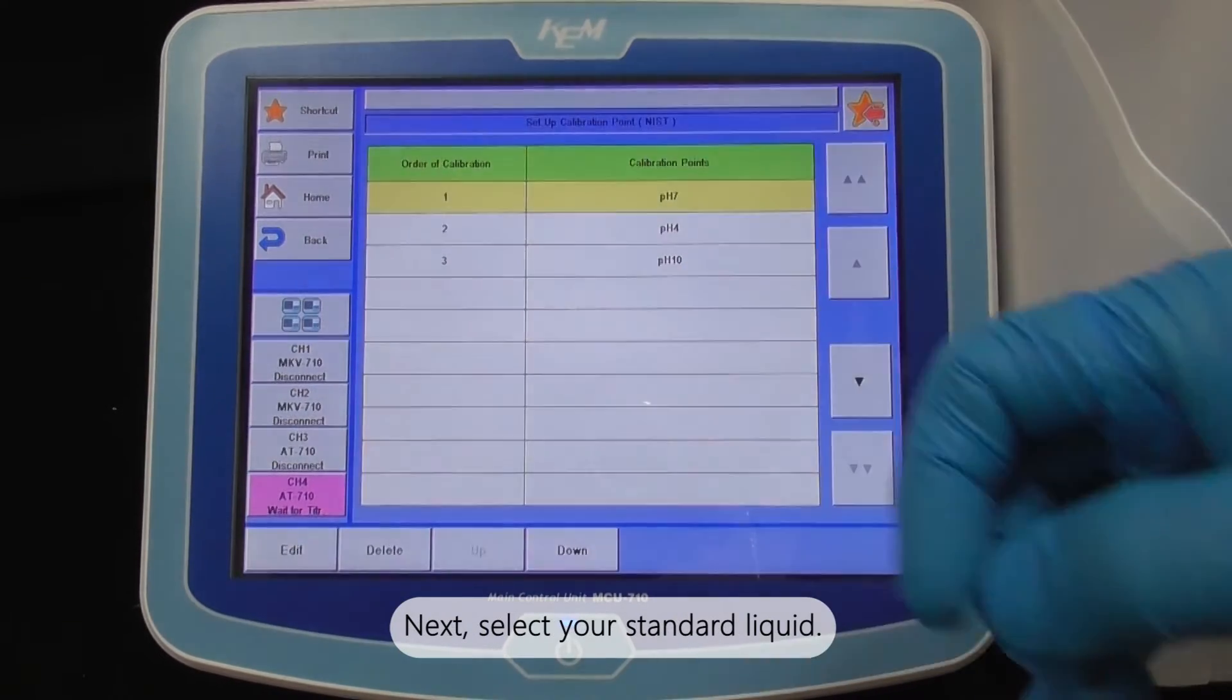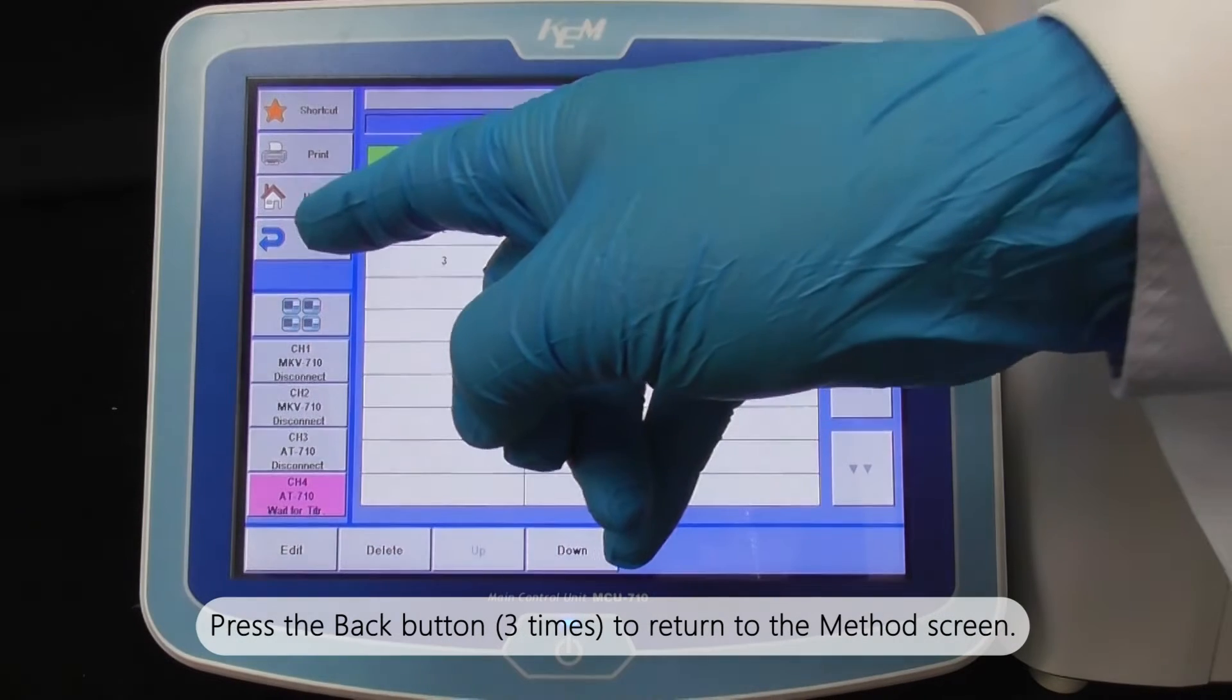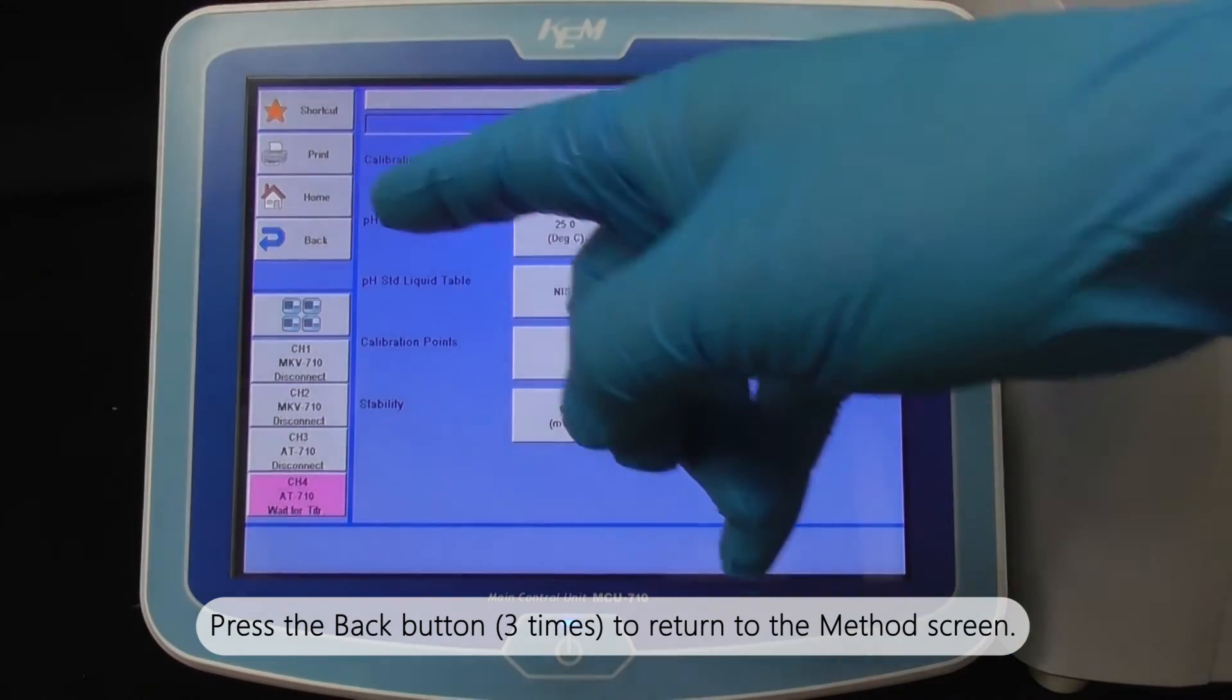Next, select your standard liquid. Here, three types including pH 7, 4 and 10 will be used. Press the back button to return to the method screen.